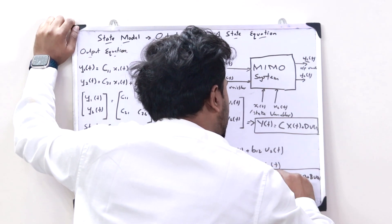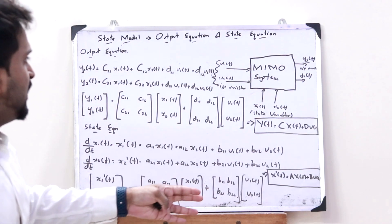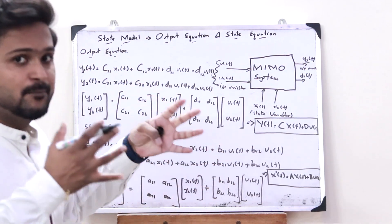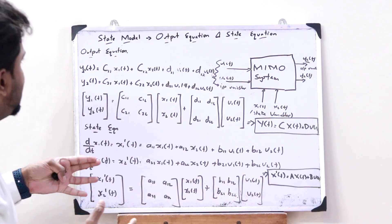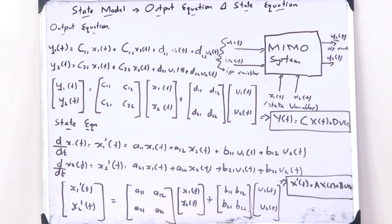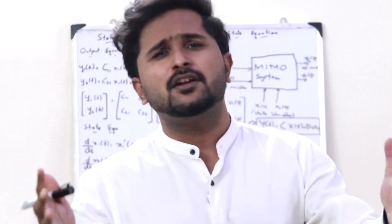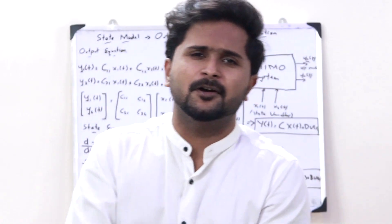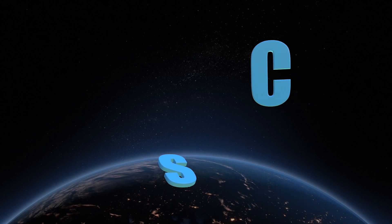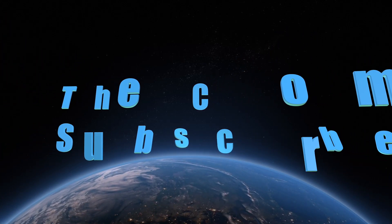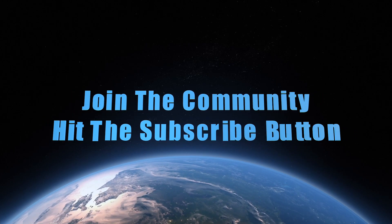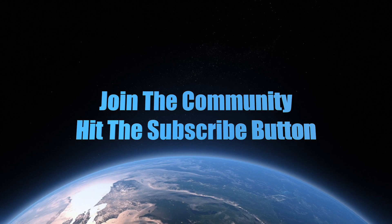These are simply what you refer to as the output equation and the state equation of a multi-input, multi-output system analyzed using state-space analysis. Together, they form the state model of a control system. I hope you now have a clear understanding of the state model. If you found this video informative, please hit the like button and subscribe. We'll discuss further topics in upcoming videos — stay tuned, stay subscribed. Until next time, thank you.